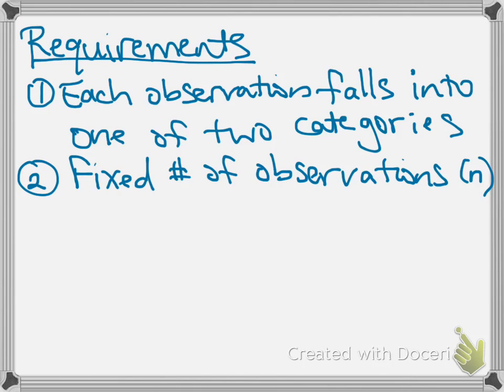The second requirement for a binomial setting is that there has to be a fixed number of observations, and we'll commonly denote this number of observations as n. So if you have a situation that goes on indefinitely, then you can't use the binomial setting to calculate any sort of probabilities. We have to know exactly how many trials or how many observations we're taking a look at in order to use a binomial distribution.